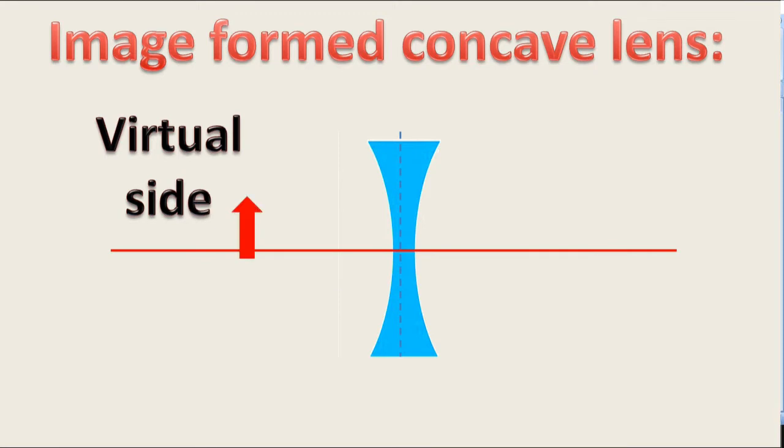The nature of the image is erect. Another side is the real side. When an object or image of an object is formed on the opposite side of the lens, then it is called the real side and a real image is always inverted.